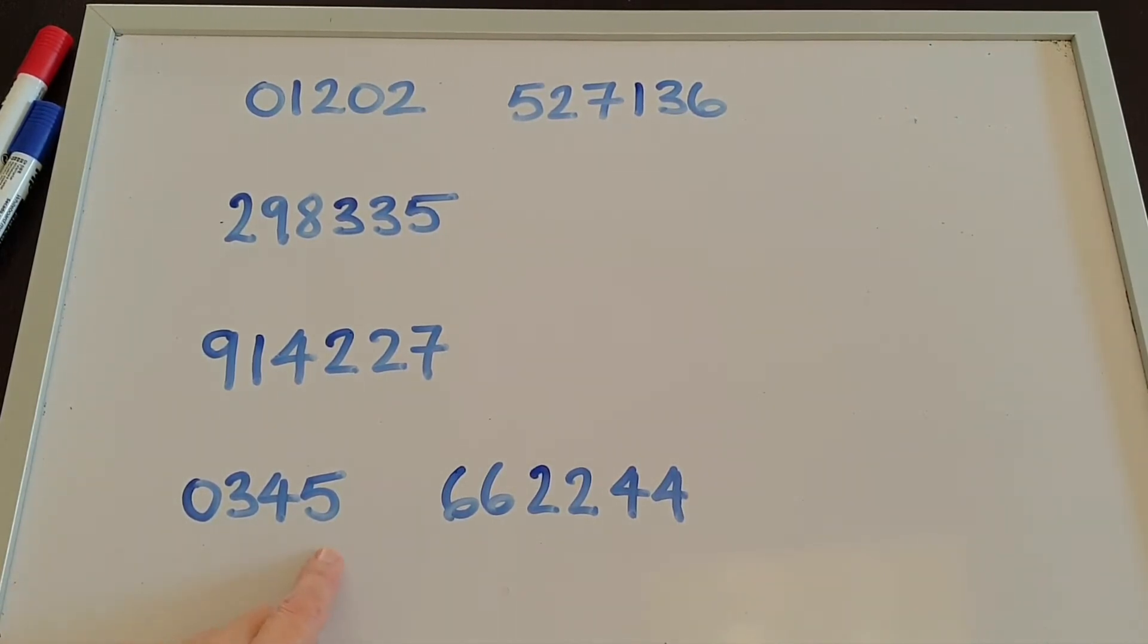0345 66 2244. It's often easier when there are groups of double numbers to say 66 2244.